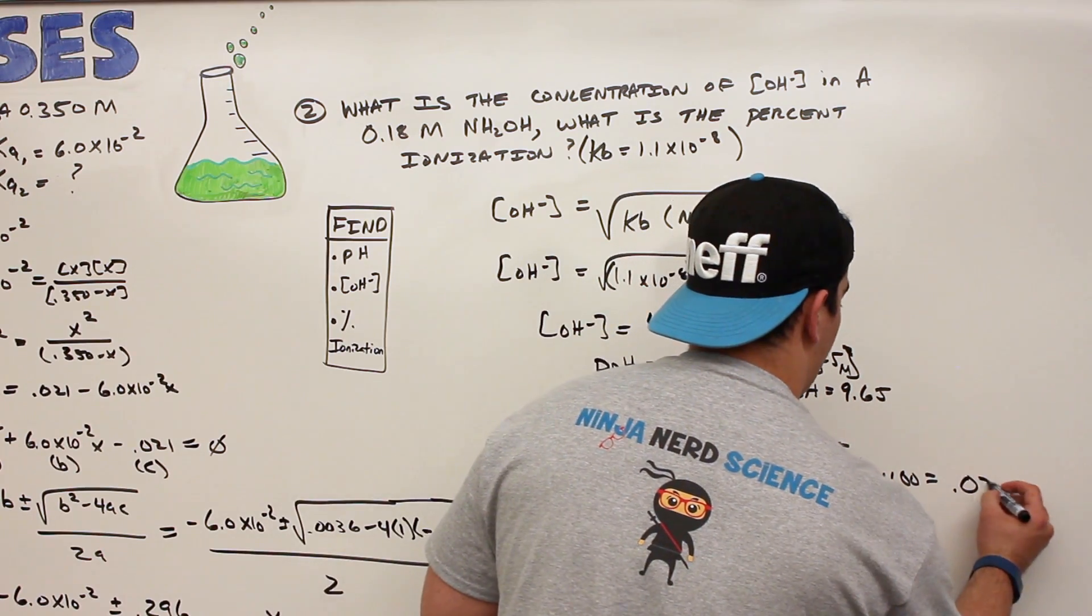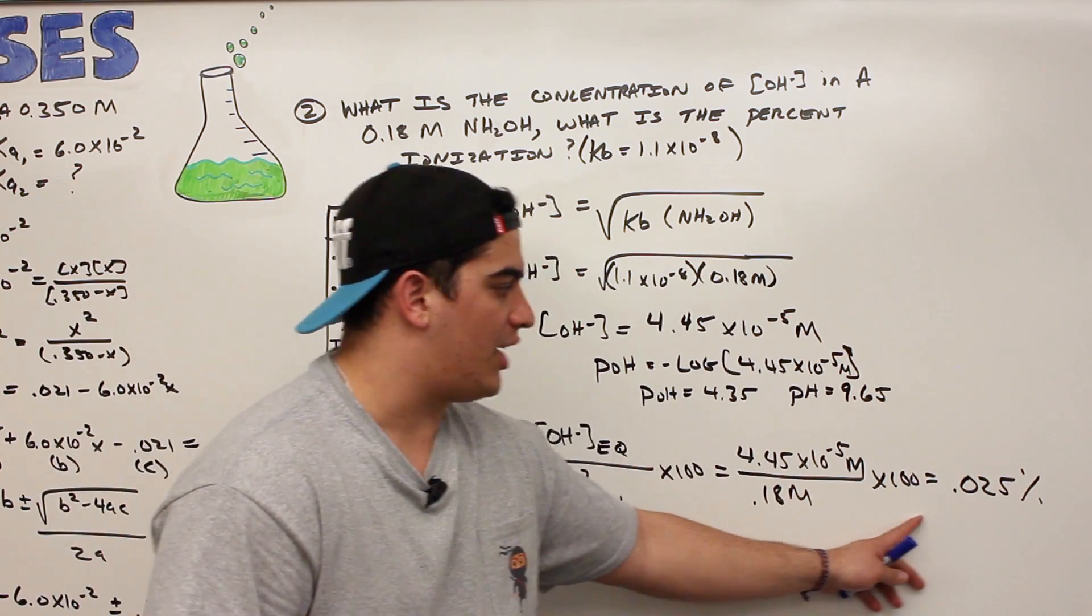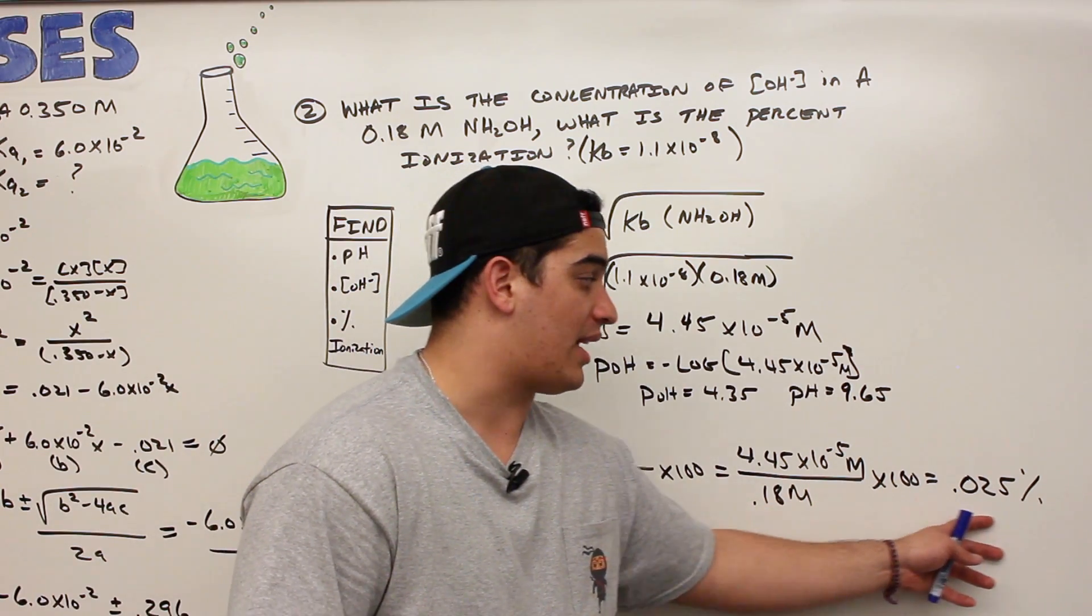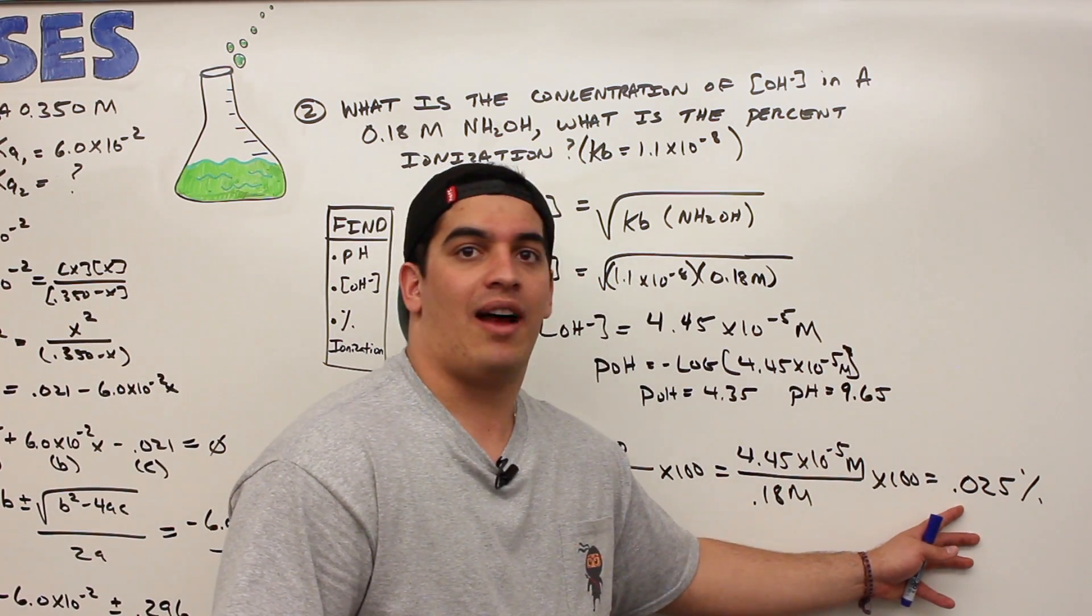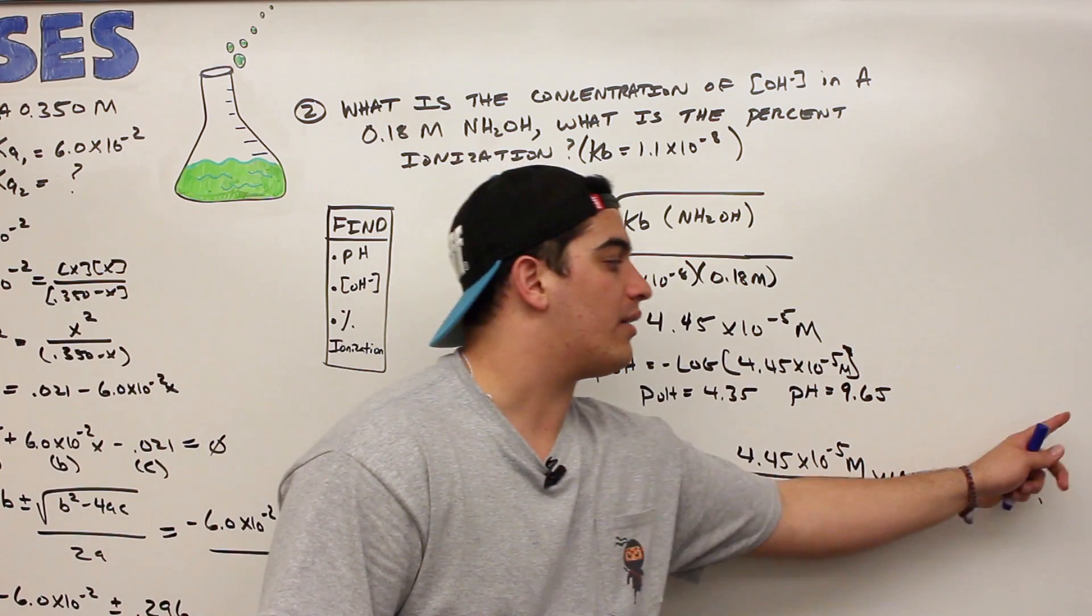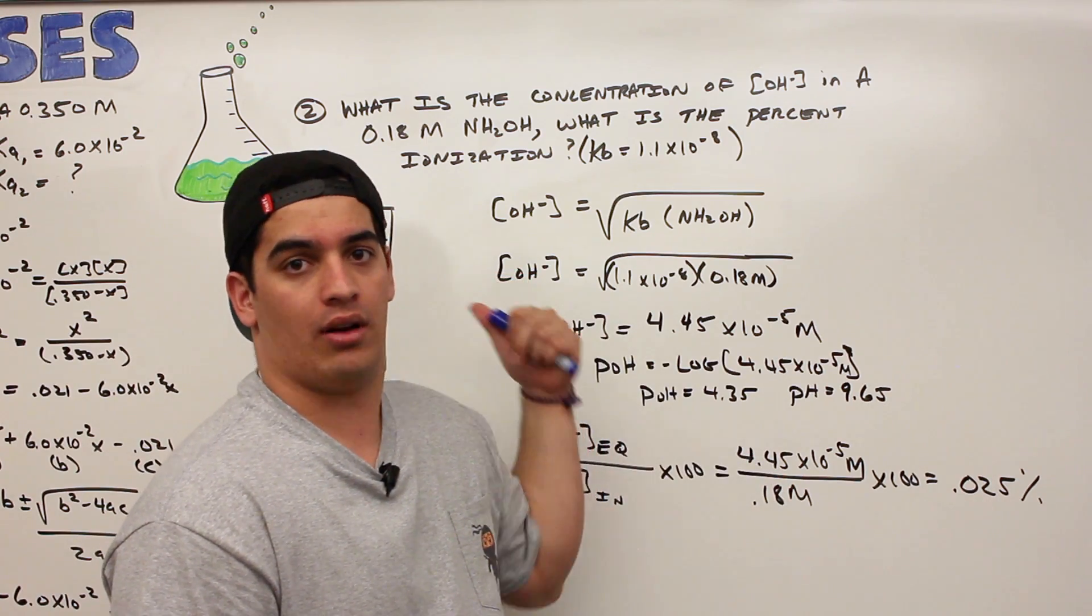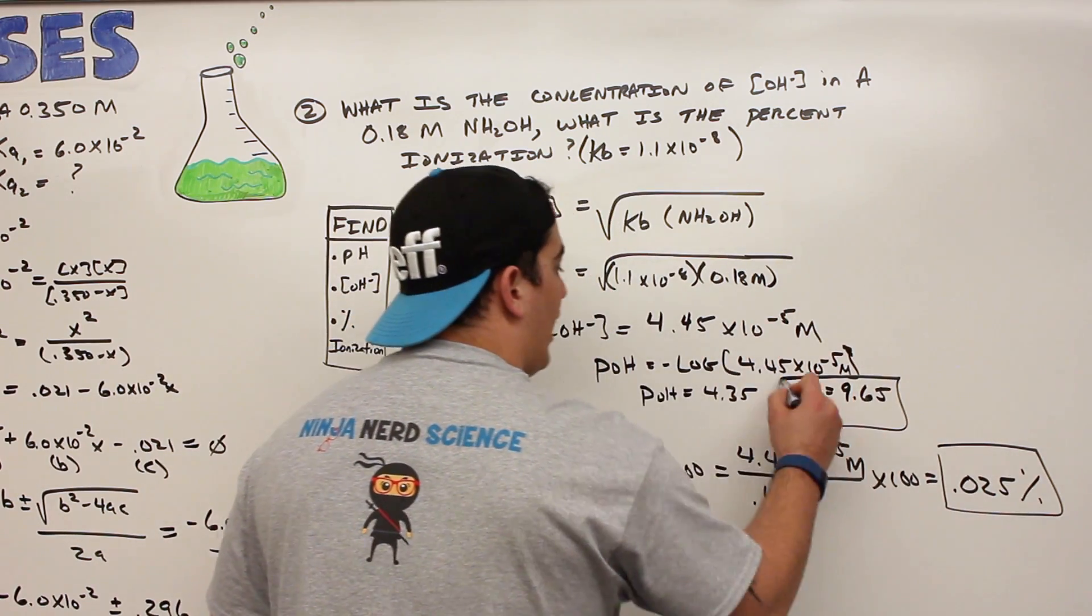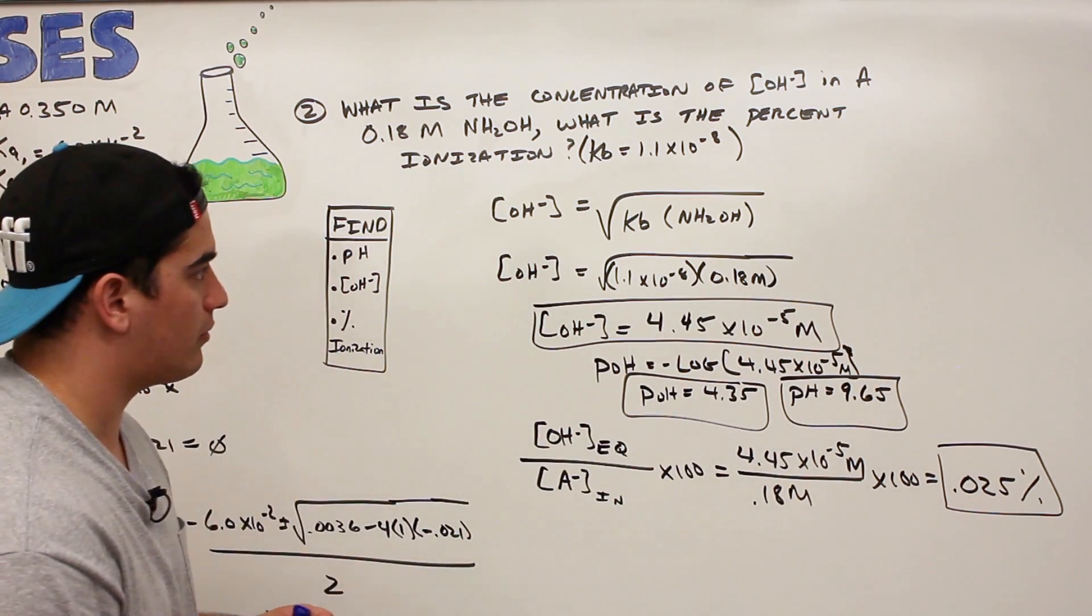0.025 percent. And what is that again? That means two things. One is it gives me the percent ionization, which also helps me to determine how strong of a base this is. If I compare percent ionization of different bases, I can tell how strong one base is compared to another. But it also gives me that 5% rule. If that number is less than 5%, that means that that x that we got rid of, that means it's zero, it's insignificant, this rule works. If it's greater than 5%, that means that that x is not zero, it is a significant number, and you have to do the quadratic formula or that trick I taught you guys. So that's how you do this problem. What do we find here? We found the percent ionization, we found the pH, we found the pOH, and we found the hydroxide ion concentration.